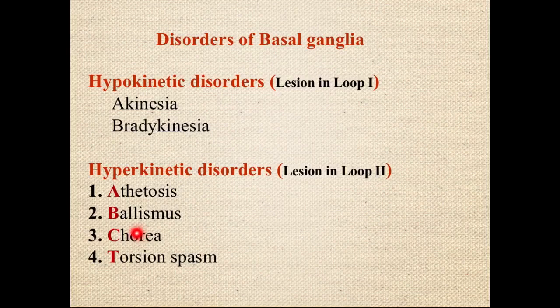Chorea is a Greek word meaning dance. If you are not a dancer at all and your friend forces you to dance, the kind of uncoordinated movement you produce is like chorea — involuntary muscle activity that flows from one muscle group to another. Normal dance is coordinated movement of one muscle group followed by the next; in chorea, the flow between groups is not smooth.